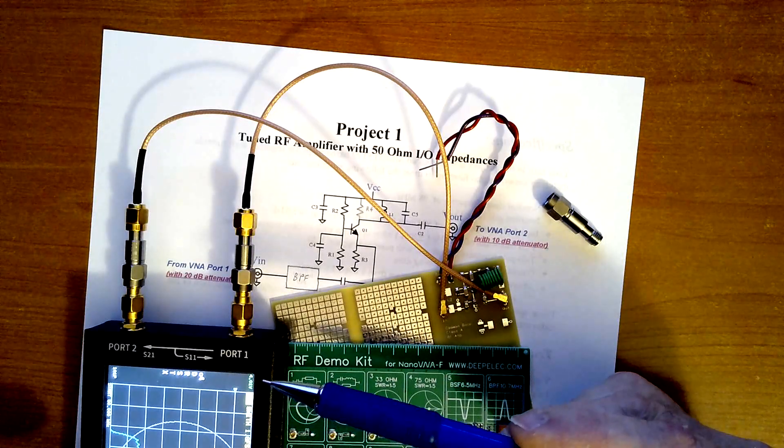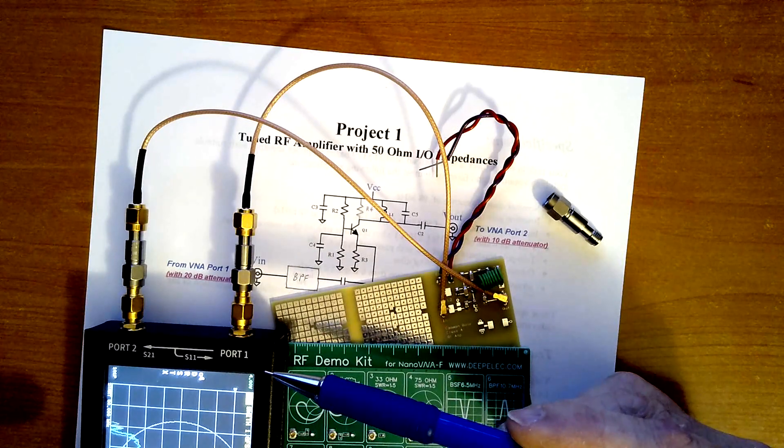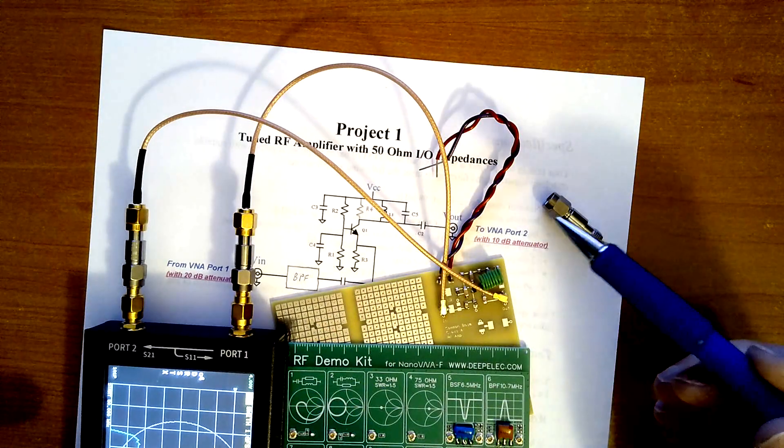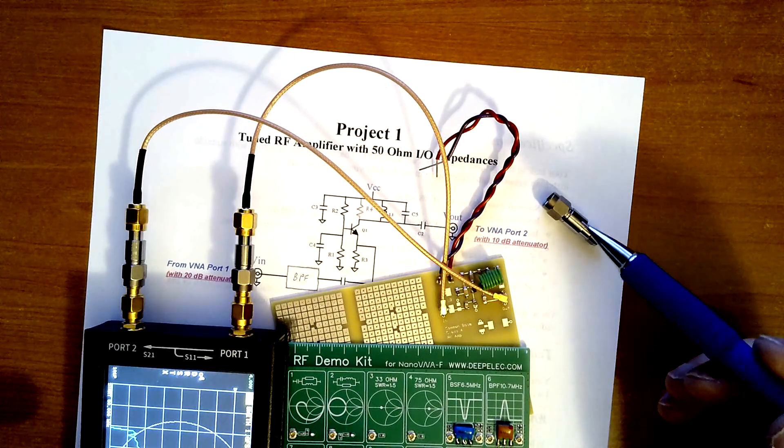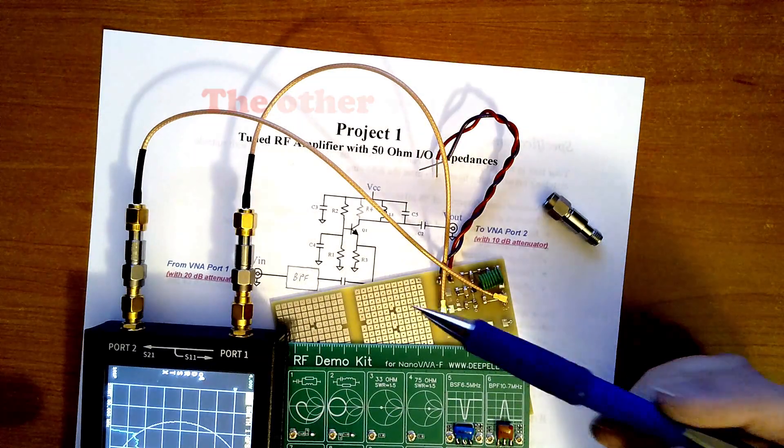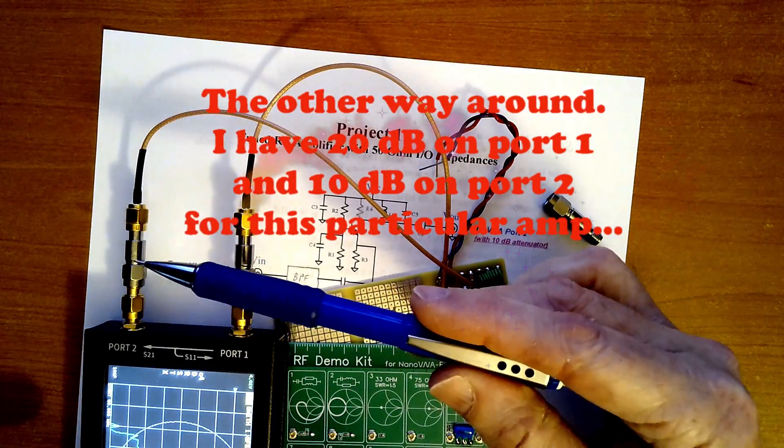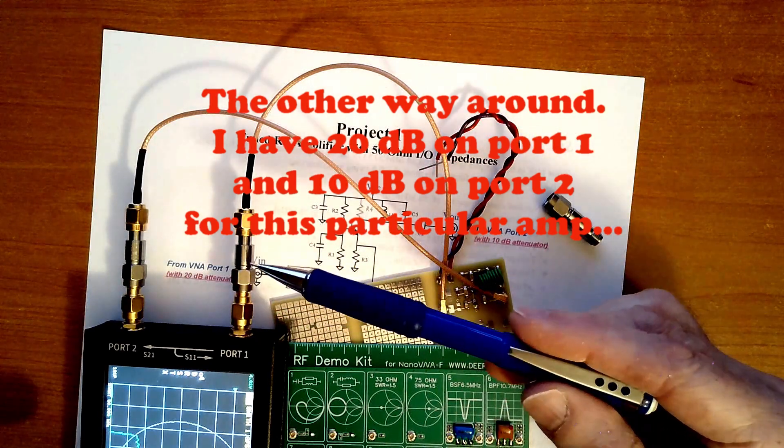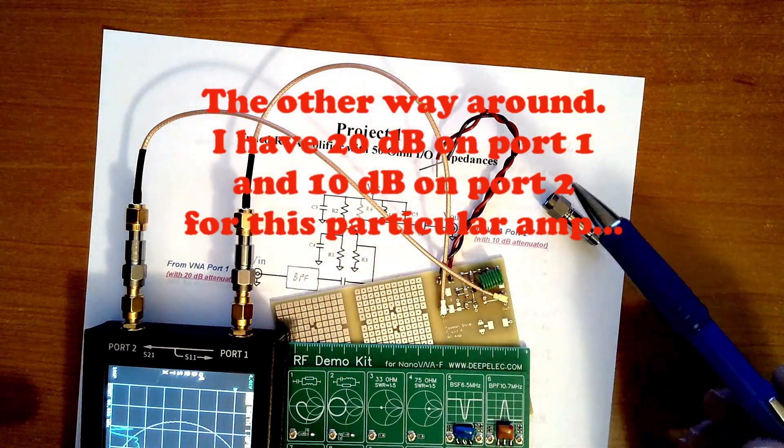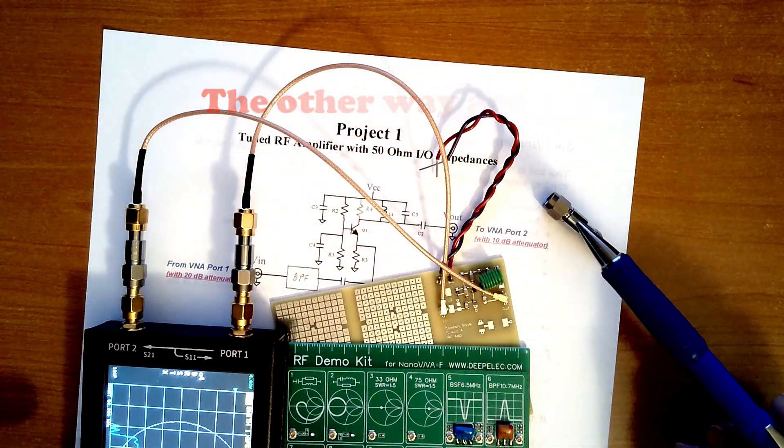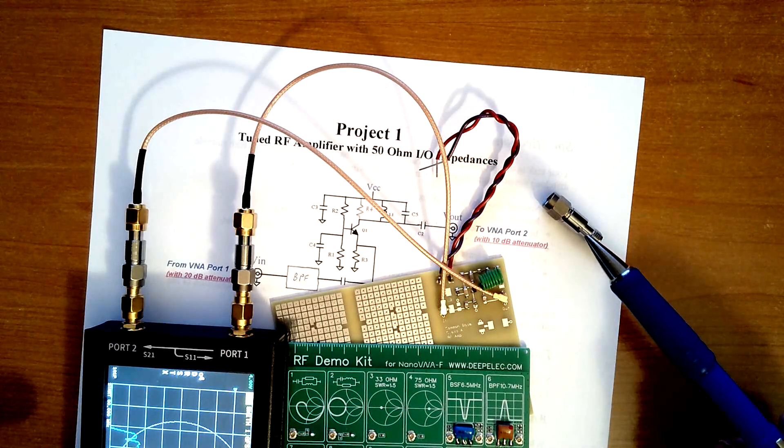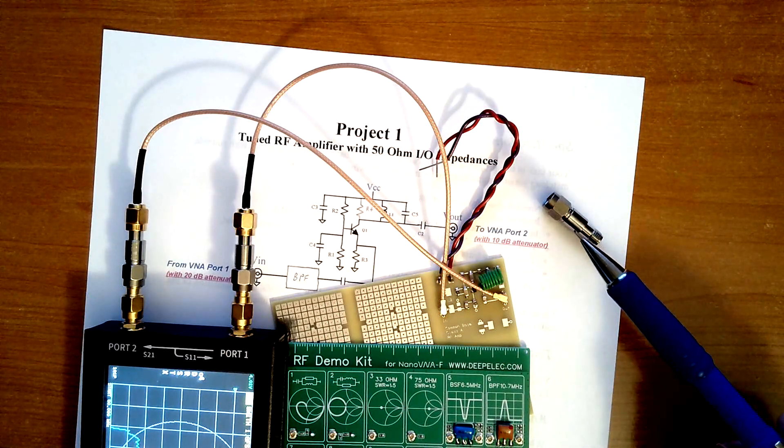But to use the Nano VNA to measure an amplifier, you're also going to need attenuators. So I bought a set of little SMA attenuators. One of them is 20 dB, the other one is 10 dB, and then there's a 6 dB one, and then I think there's also a 3, 2, and 1 dB attenuator in the set. Got that for about 40 bucks.